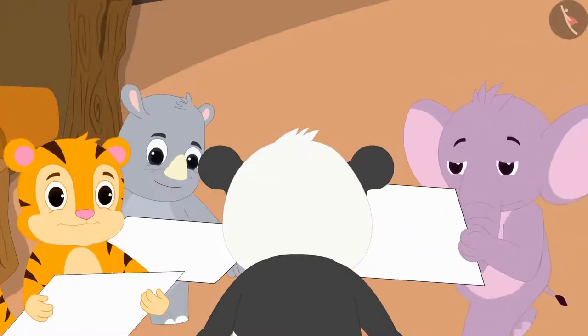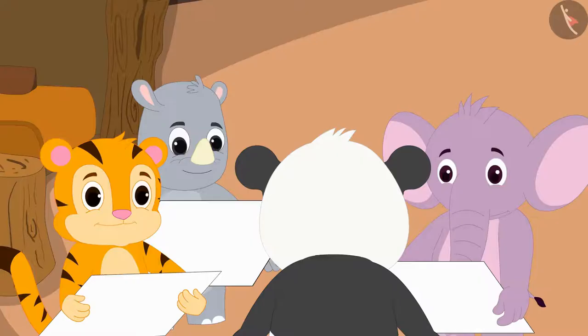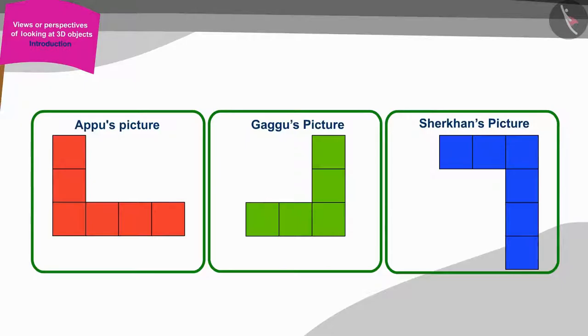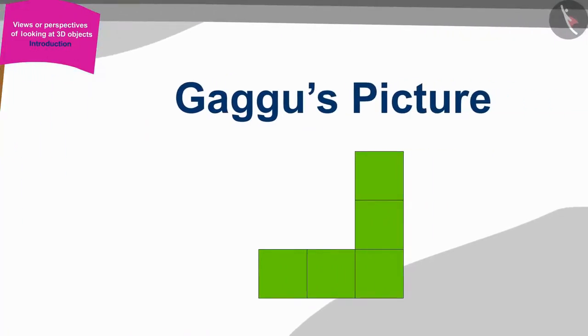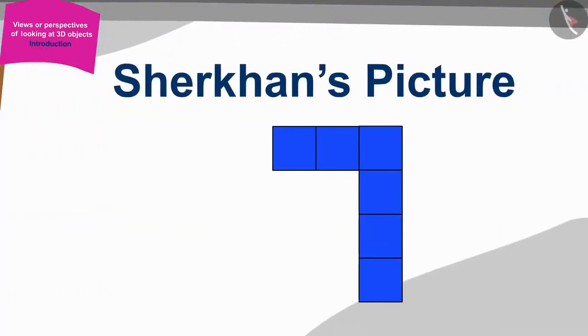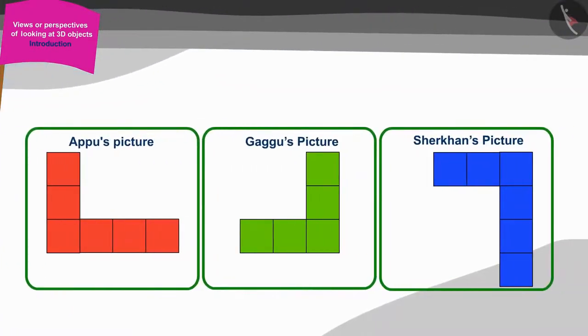All three were shocked when they showed their pictures to Golu. The pictures made by the three of them were completely different. Appu's picture was like this. Gaggoo made such a picture and Sher Khan's picture looked like this. Children, can you tell how this can happen? When the three saw the same shape, how were their pictures so different?